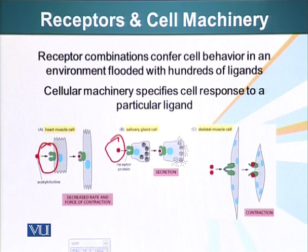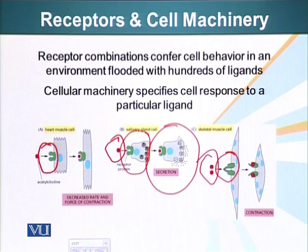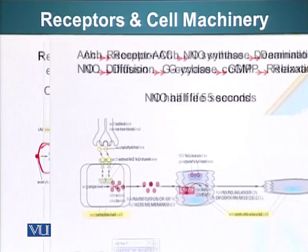When the same acetylcholine molecule binds the same receptor present on salivary gland cells, it will not cause a decreased rate of contraction — instead, it will cause the salivary gland cell to release or secrete certain stored proteins. On skeletal muscles, the receptor is different; when acetylcholine binds its receptor on muscle cells, it causes contraction. The heart cell and salivary cell have the same receptor interacting with the same ligand, producing different results, because the other molecules inside the cell interacting with the cytoplasmic domain of the receptor are different.